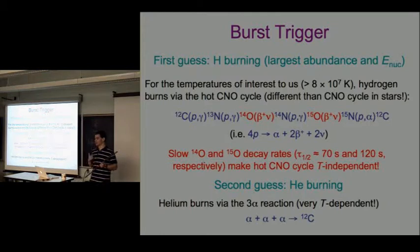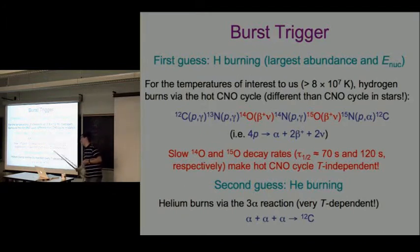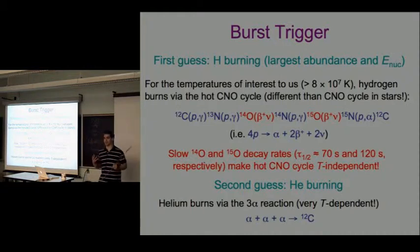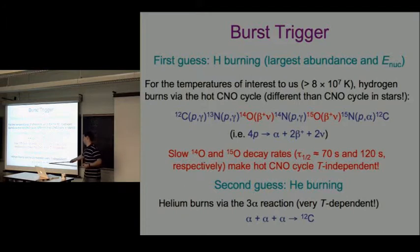Helium is the next most abundant ion and gives the next greatest energy release when burned to iron. Unlike the hot CNO cycle, helium burning via the triple alpha reaction is very temperature sensitive - there are no beta decays. This is the same reaction that occurs in very massive stars, and essentially all elements heavier than helium in the universe have gone through this reaction.